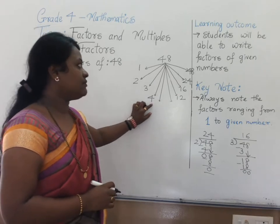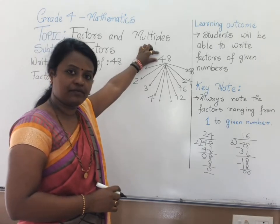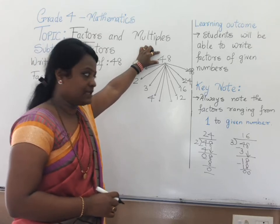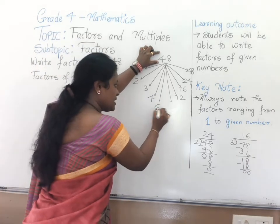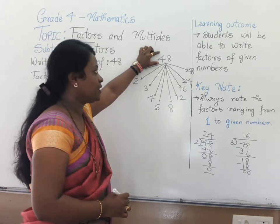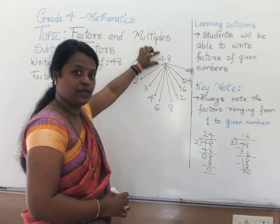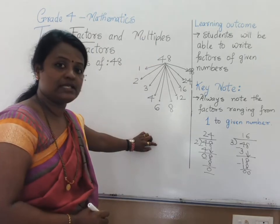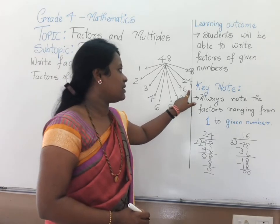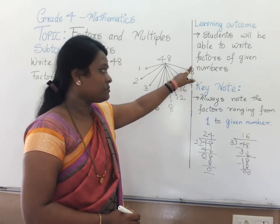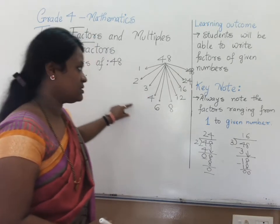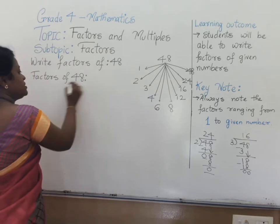Can we divide 48 by 5? No. 6: 6 8s are 48. Can we divide 48 by 7? No. How about 8? Now you could see all the data are ranging the same. This states we have noted all the divisors — that is all the factors of 48.